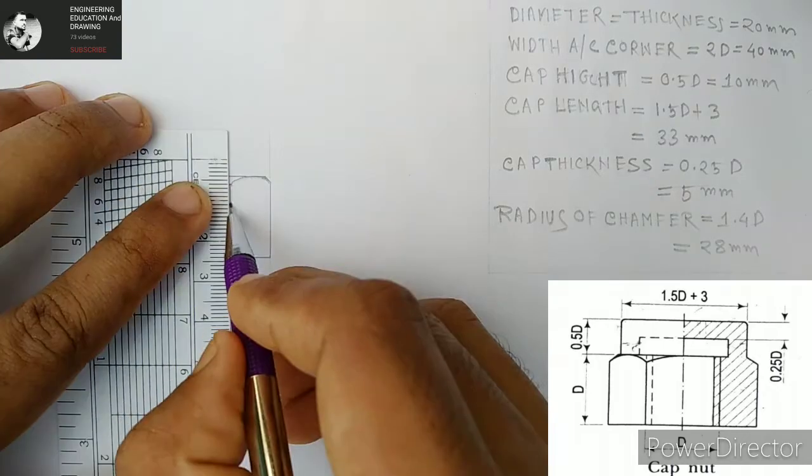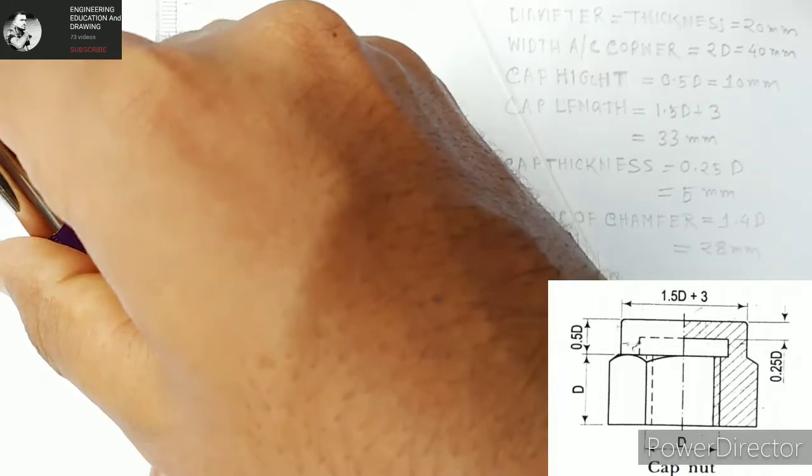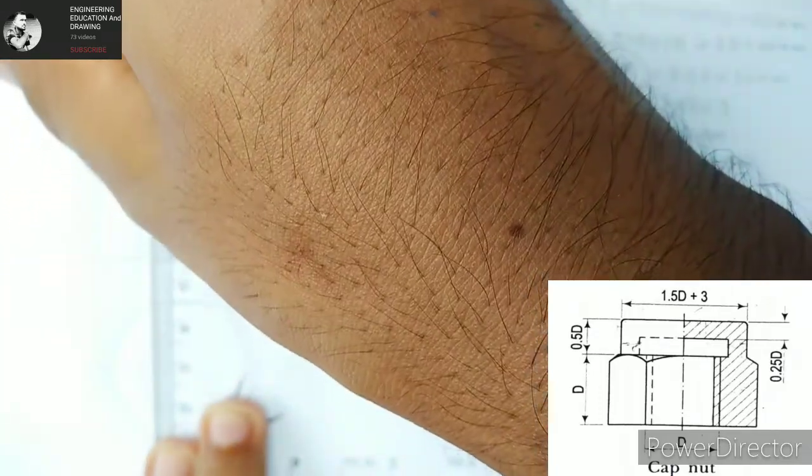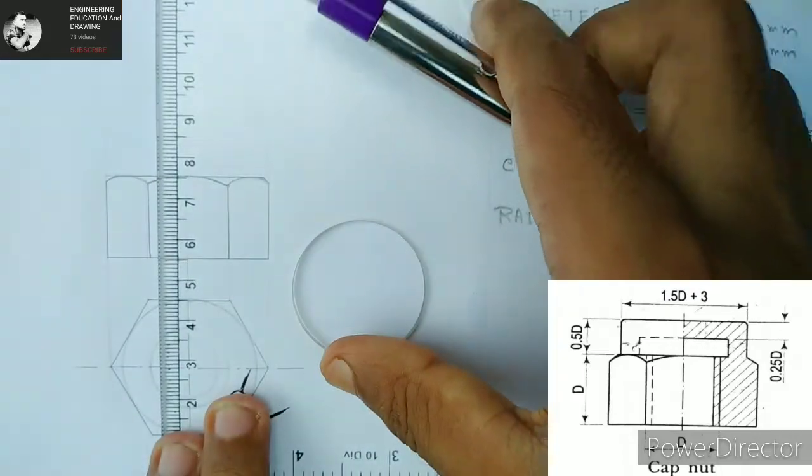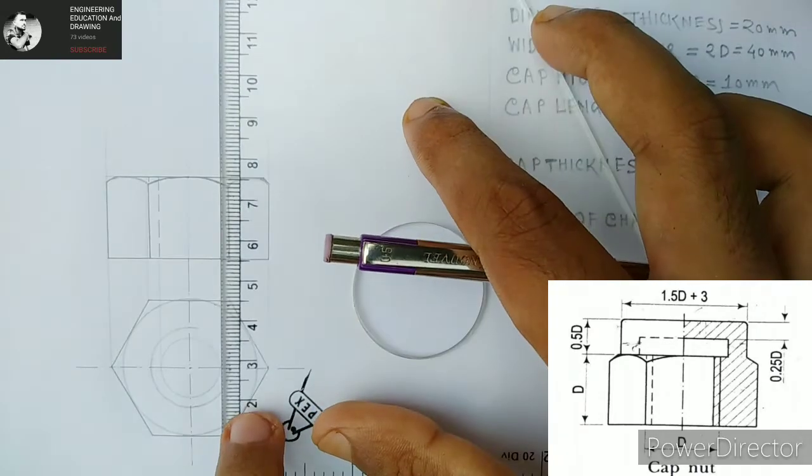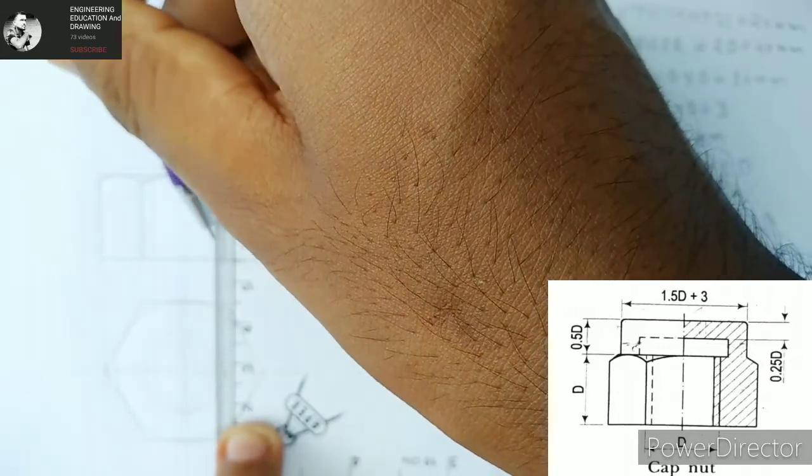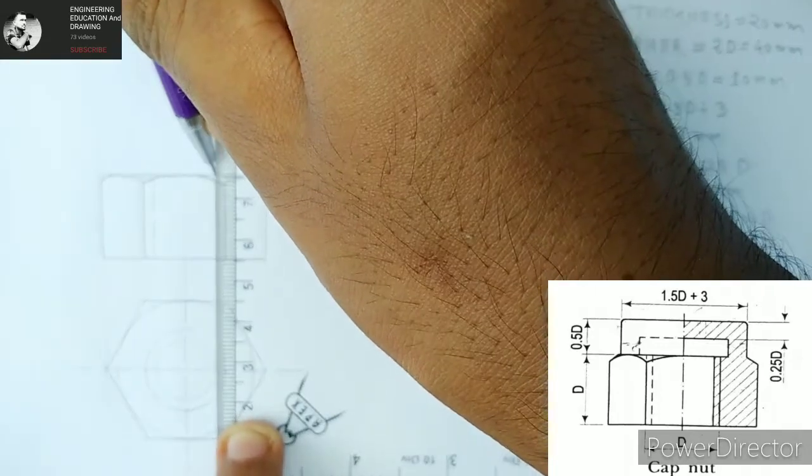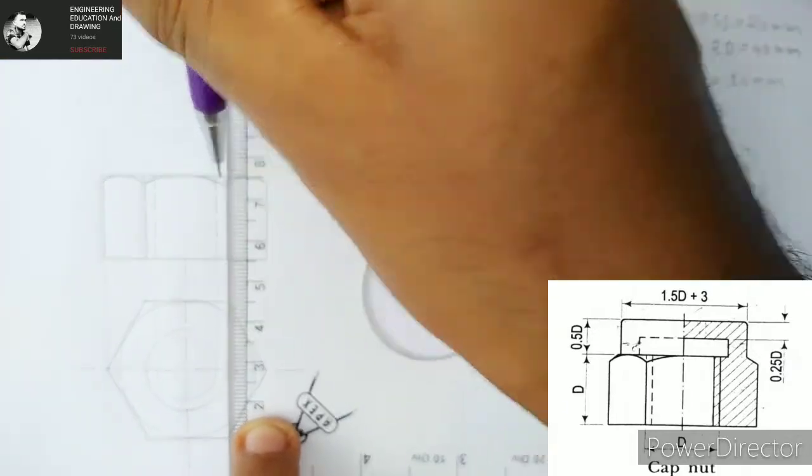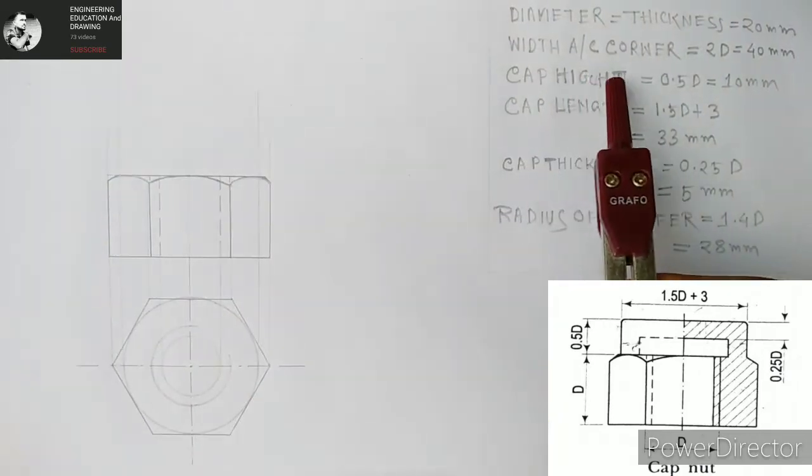We are making this line more visible. Then we are making the hidden lines here. Two hidden lines are visible and the rest of the two are not visible. So gradually we are making the dotted lines. This is completed. The front view is completed.